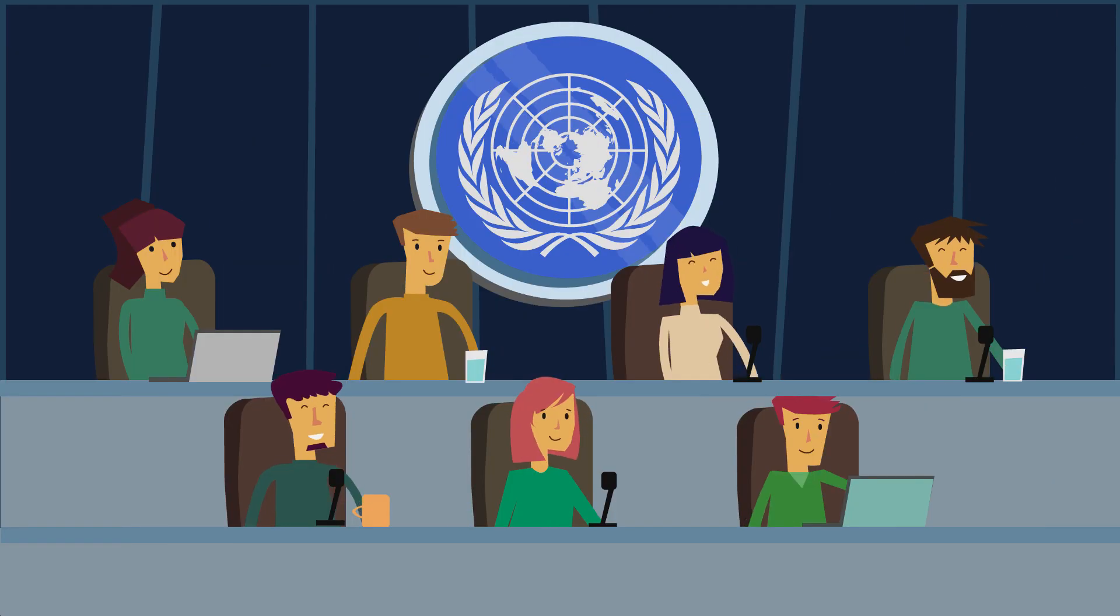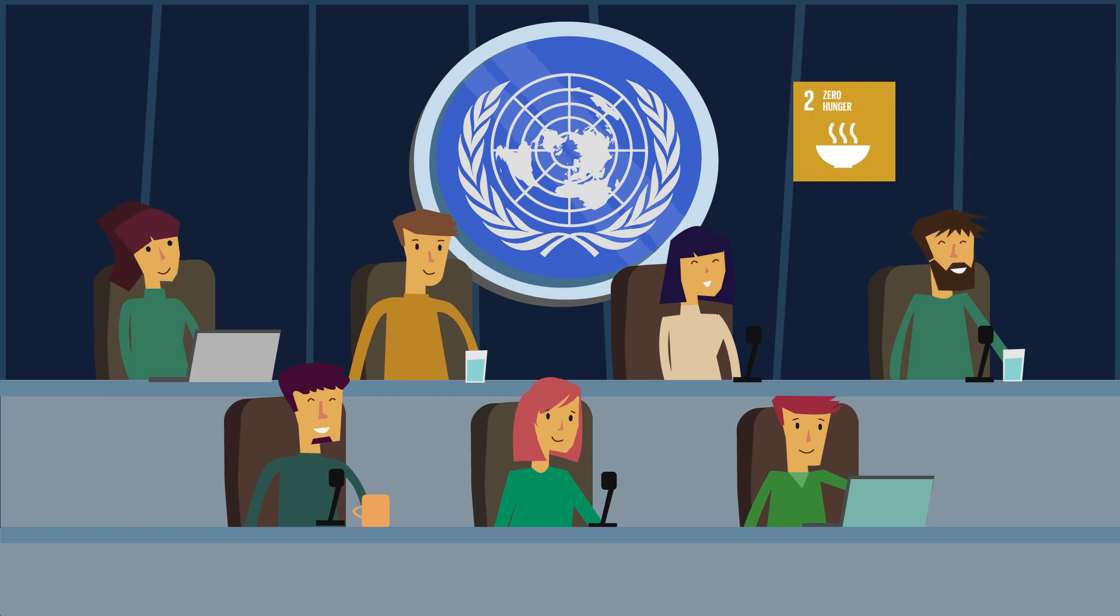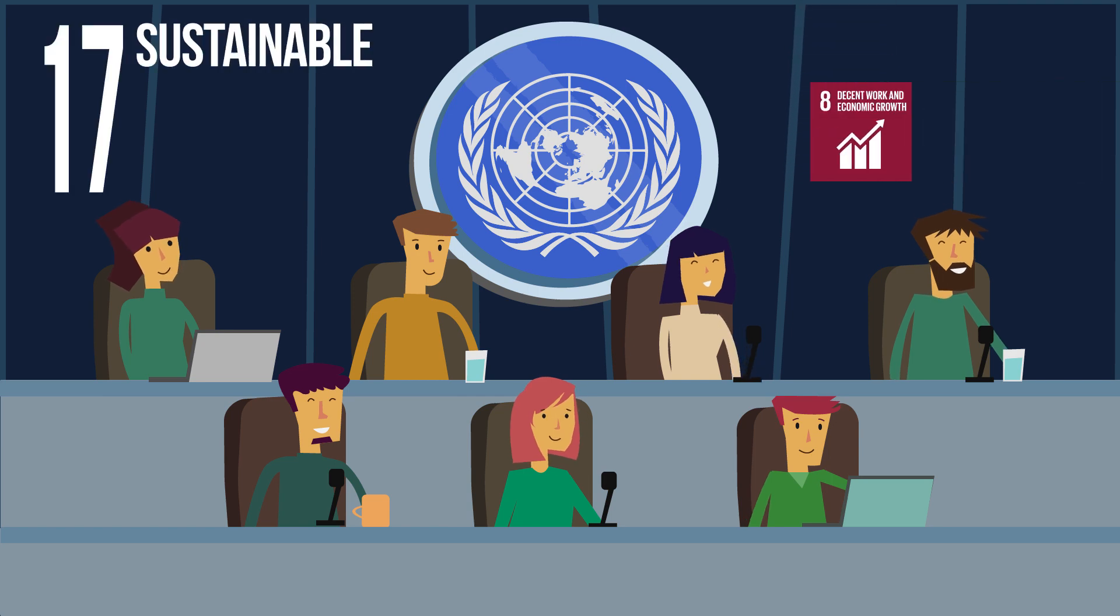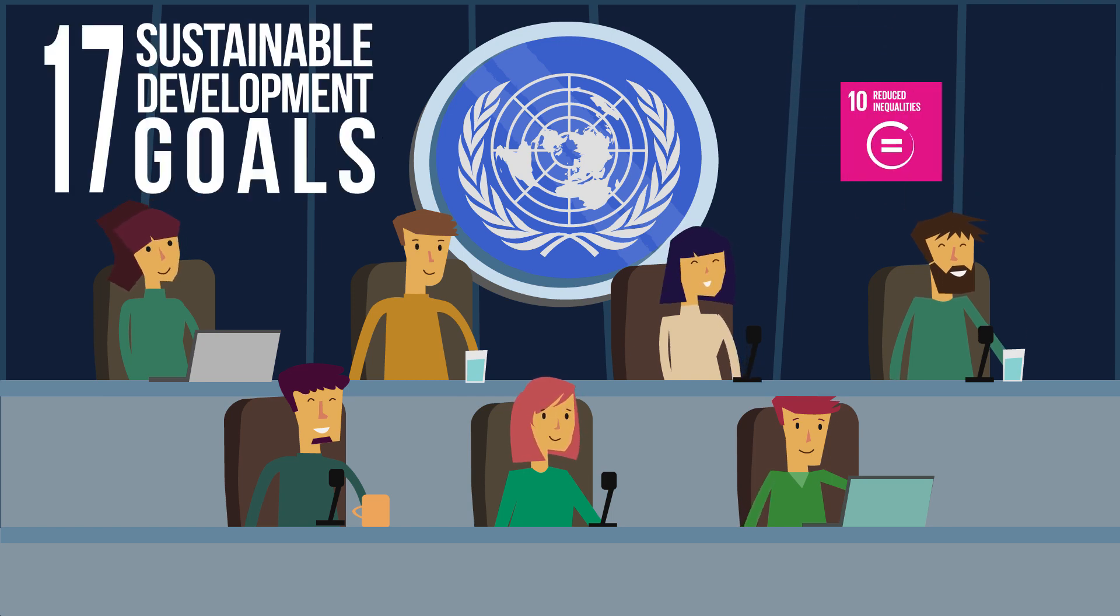The United Nations has agreed on the key issues which the world needs to tackle by 2030. The progress towards these 17 sustainable development goals will help to lift people out of poverty, create equality between groups, and enable a sustainable future.